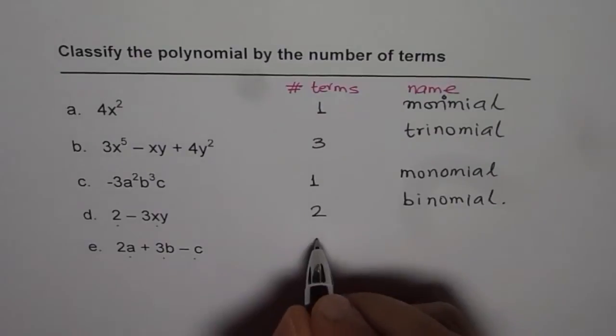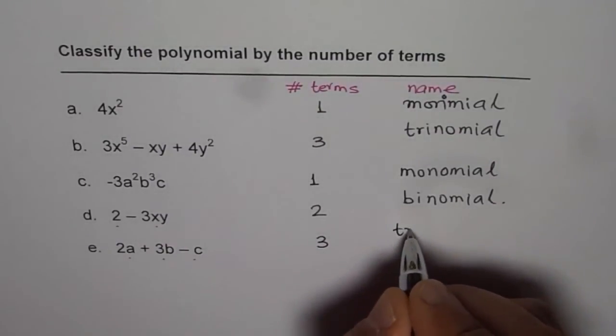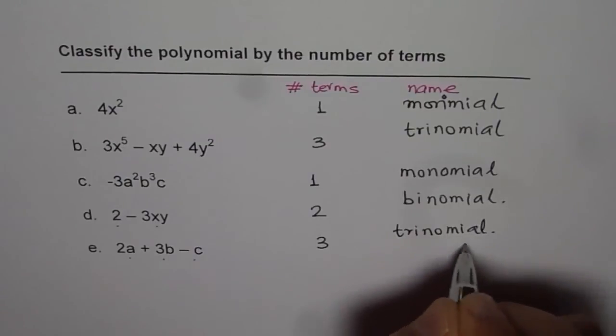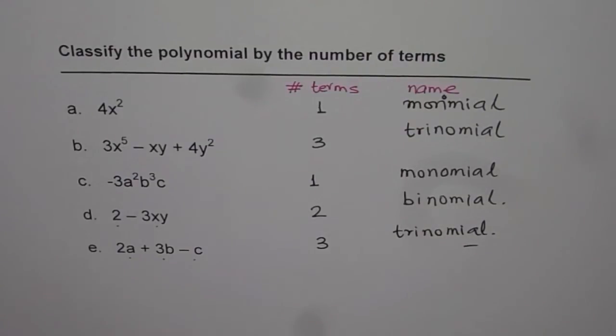Now 1, 2, 3 terms this time, trinomial. So that is how we name polynomials. In general, when the terms are more than 4, we just say polynomial in general. So that is how we can classify polynomials based on number of terms. Thank you.